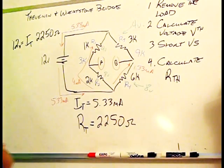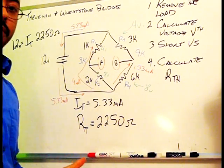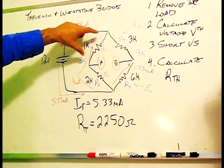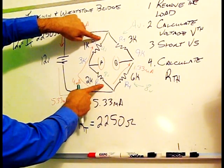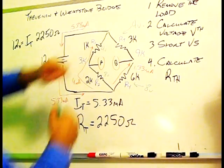Now, the reason I say that I knew these would equal is because of the voltage divider formula. You notice, again, we know that 12 volts has to drop here, and we know that 12 volts has to drop here.